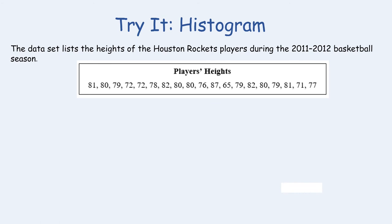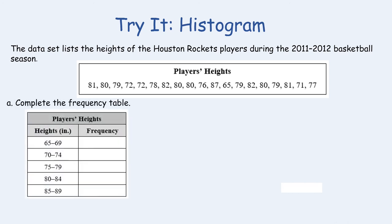Now let's create our own histogram. The data set lists the heights of the Houston rocket players during the 2011-2012 basketball season. The heights are indicated in the box on your screen. First we're going to create a frequency table. Take a look at the frequency table on the screen. We have a title labeled player's height. We have height in inches that is already divided into intervals and then we have a column that's titled frequency.